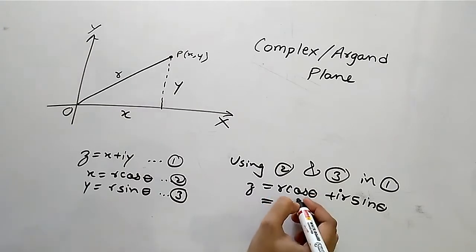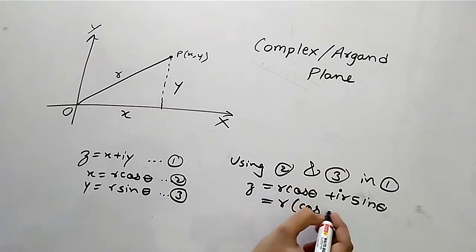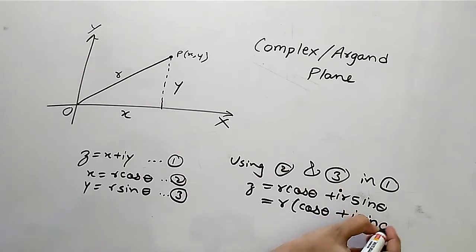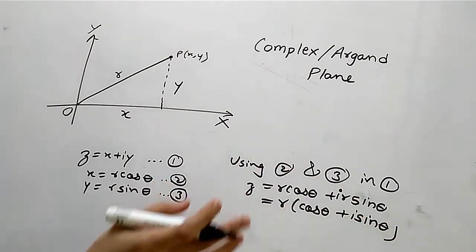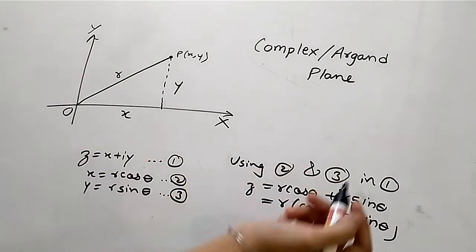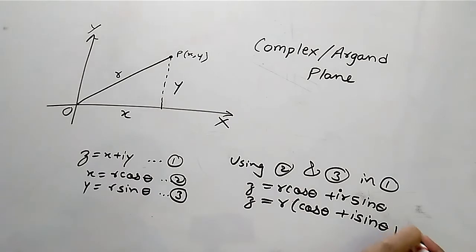Taking R as common, we get Z is equal to R times (cos theta plus i sin theta). We will call this equation number 4.